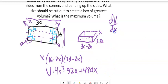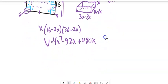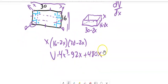Now we want to maximize that volume. So we are going to take the derivative of this relative to x. And so if I take that derivative I get 12x squared minus 184x plus 480.